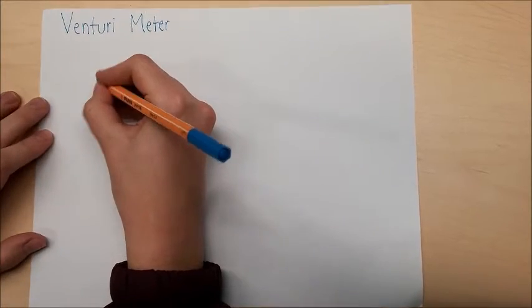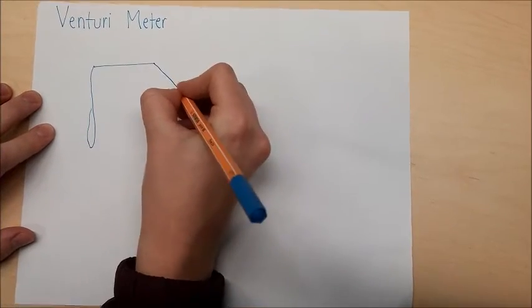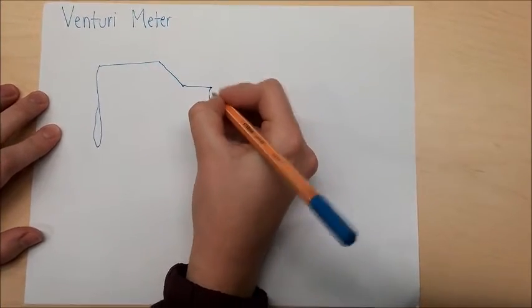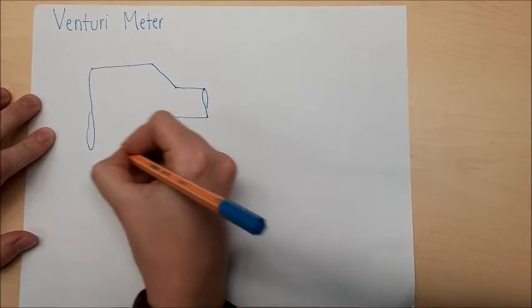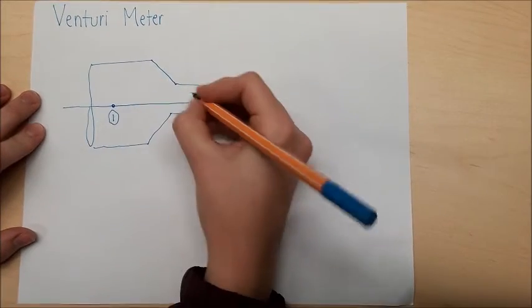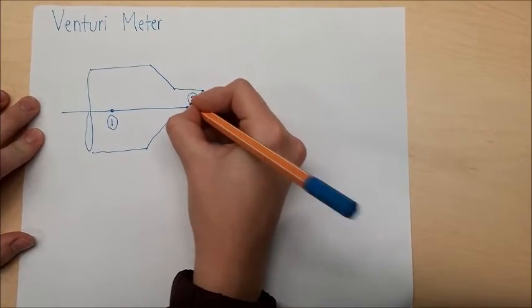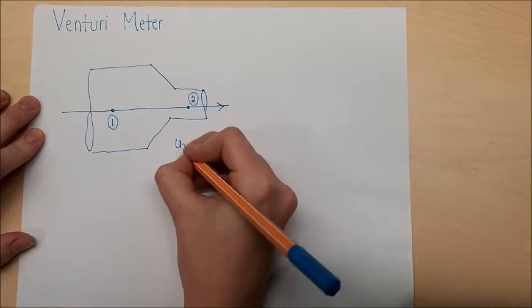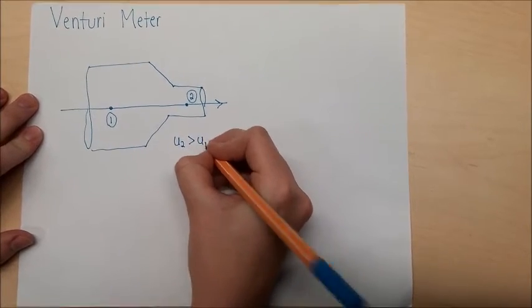The venturi meter uses a converging section of a pipe in order to determine the flow rate of the fluid. By following one streamline in the venturi meter, we can label point one as the point in the larger section of the pipe. Point two will be in the smaller section. By using the continuity equation, we know that point two has a larger velocity than that of point one.